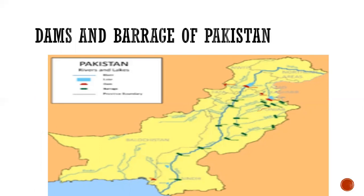Let's have a look at the barrages and dams built on the rivers through a map. You can see River Indus and its eastern and western tributaries. The green rectangular box shows the barrages built on rivers and the red box shows the dams. Green and red colors show different barrages and dams of Pakistan.